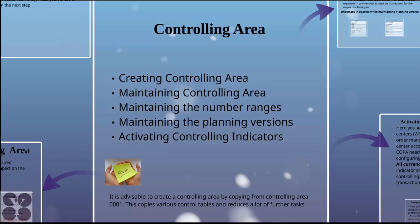It is advisable to create a controlling area by copying from controlling area 0001, which is the SAP standard controlling area that comes with the ECC package. This copies various control tables and reduces a lot of manual work. However, you can create it manually, but it may not copy all the tables and back-end configs, so it is advisable to copy 0001 and then customize.